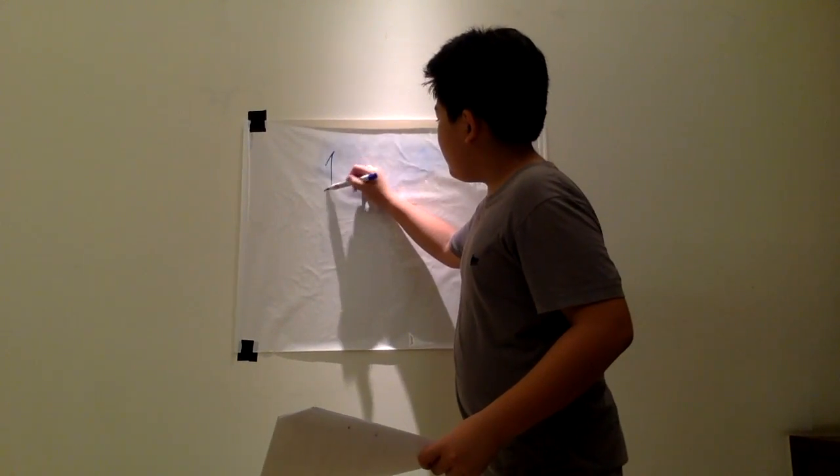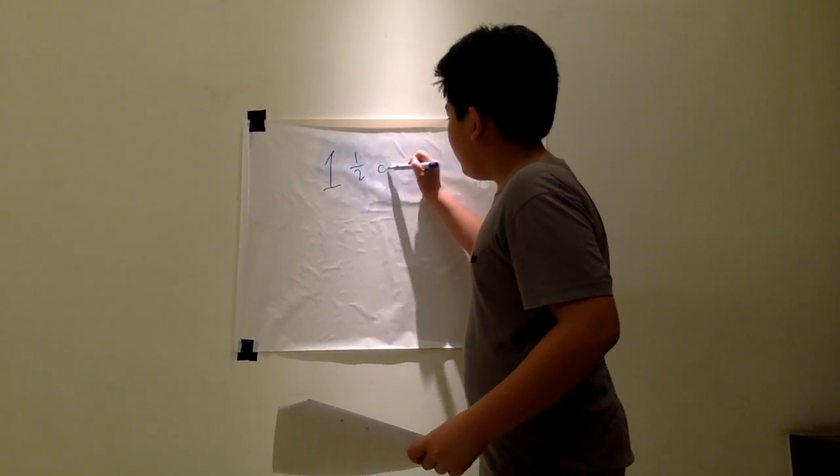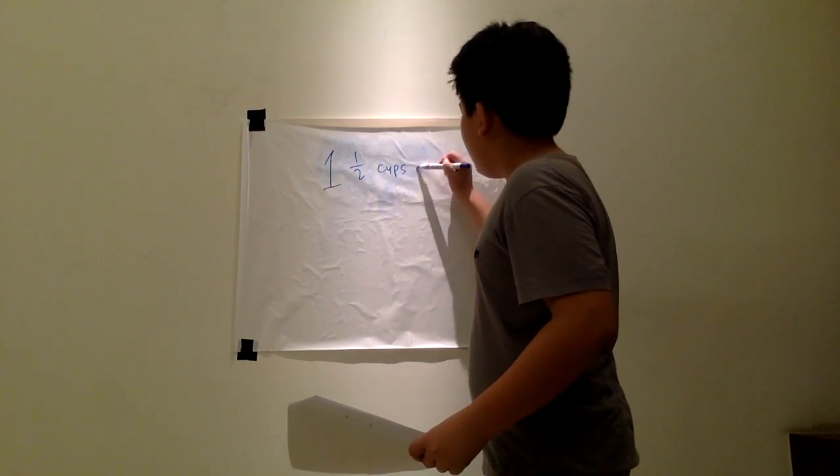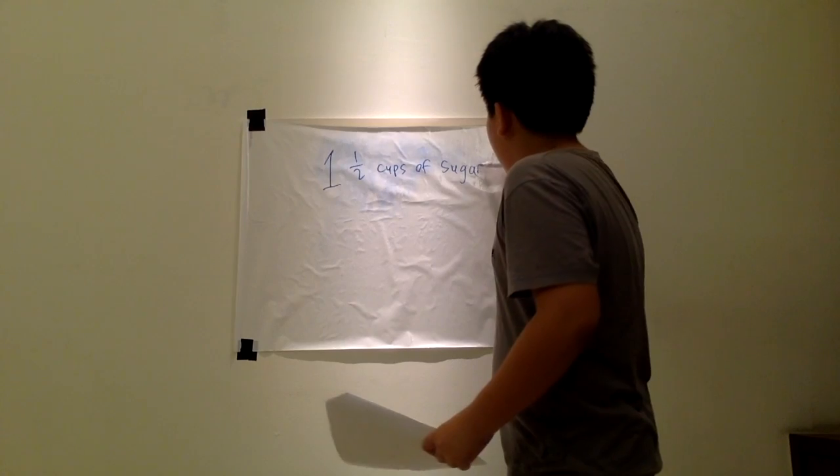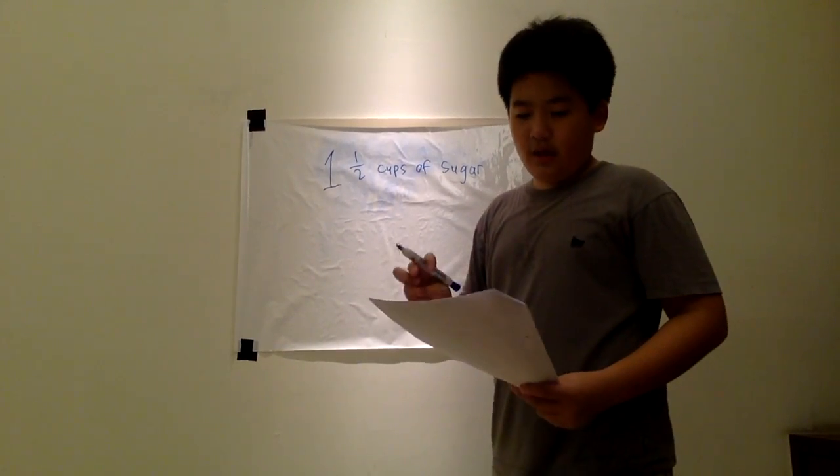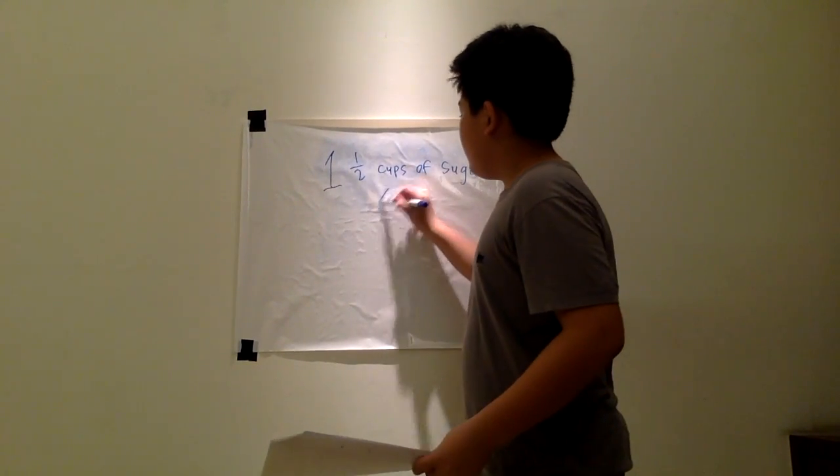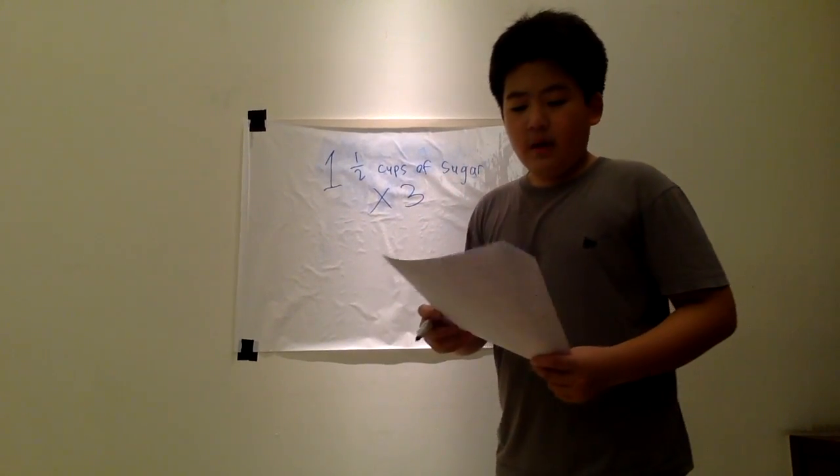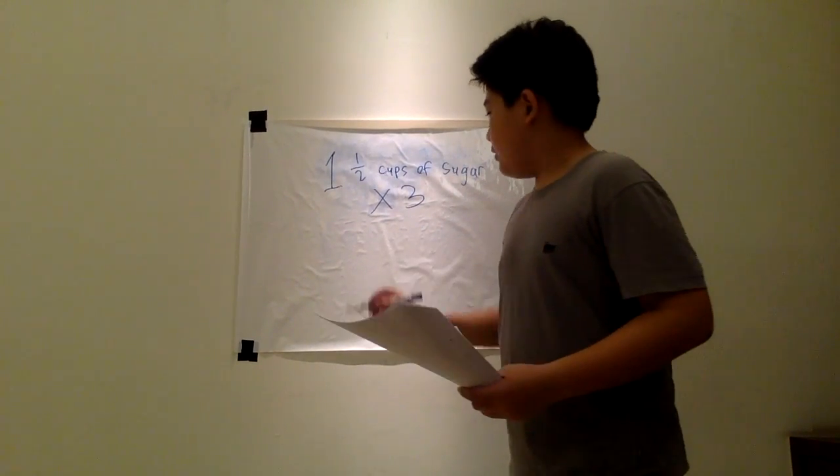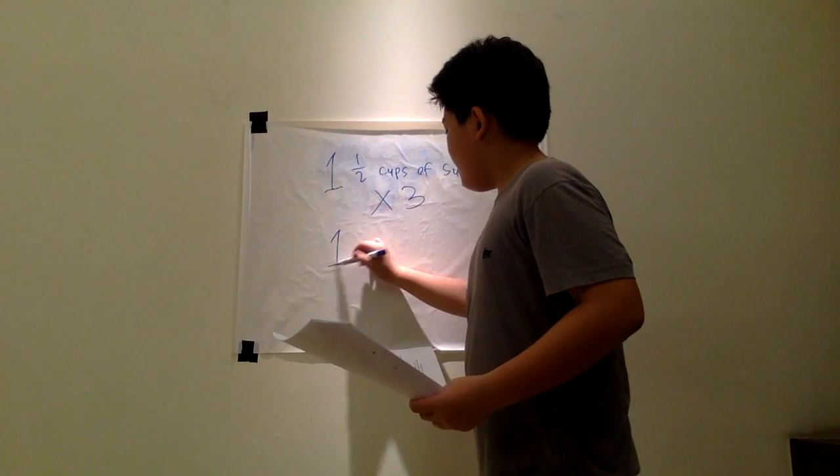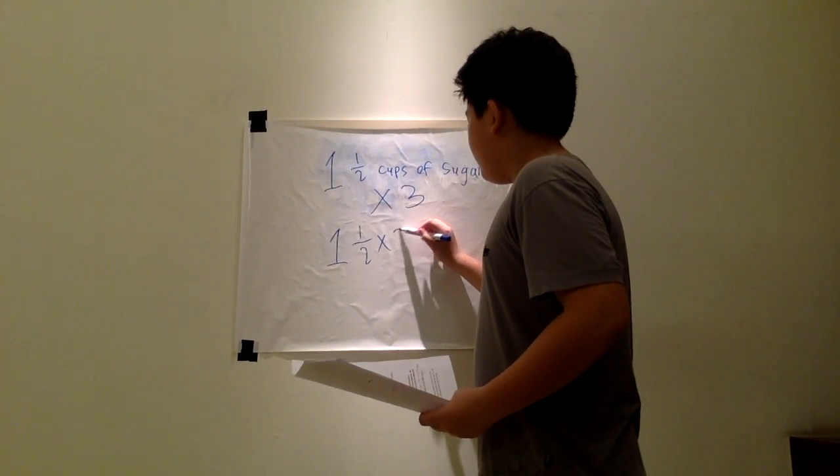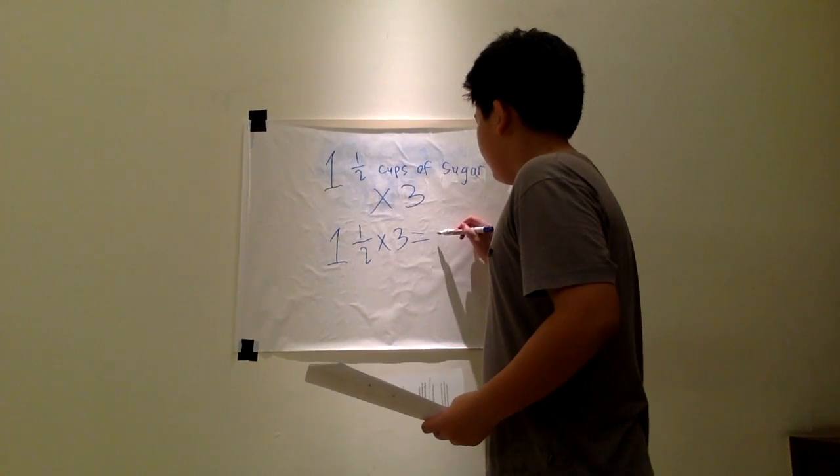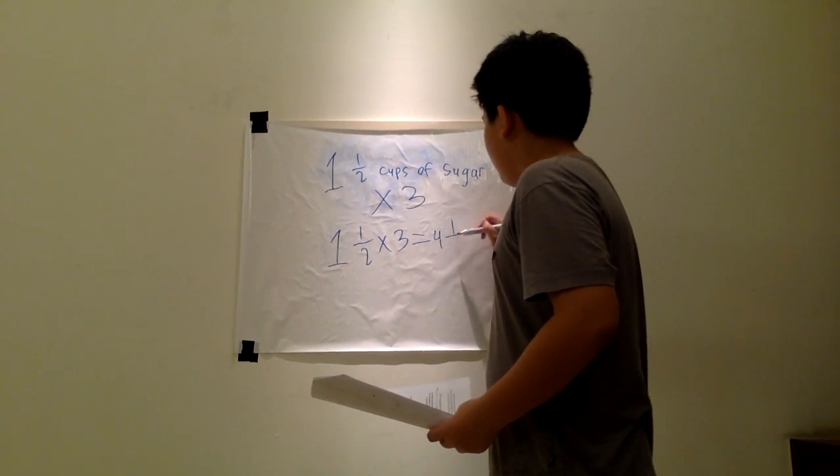If it says one and a half cups of sugar, that means you should times it by three. And so the equation would be one and a half times three equals four and a half.